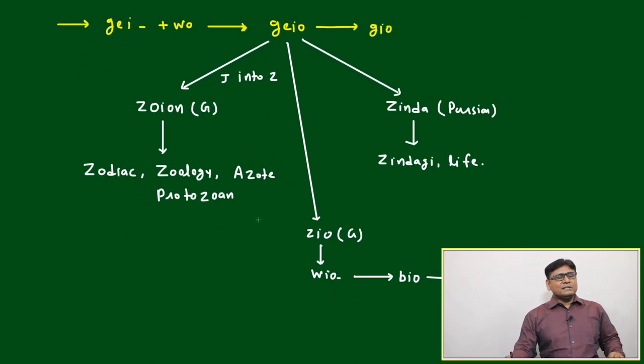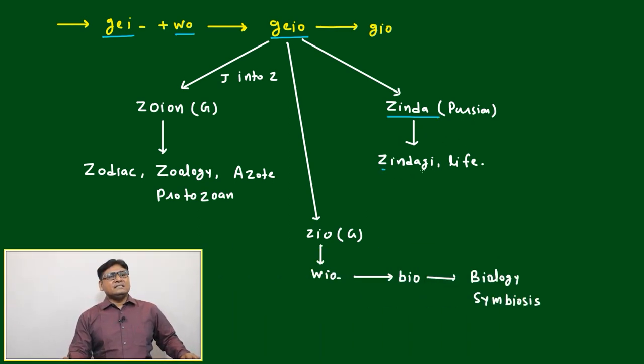This is the G sequence and based on that, multiple words have come. G plus O - it has become difficult to pronounce for any part of the world, so it is divided into two or three different routes. One has come to the Persian side - that is 'zinda' means Persian. Zindagi, life - all these words have come from zinda.